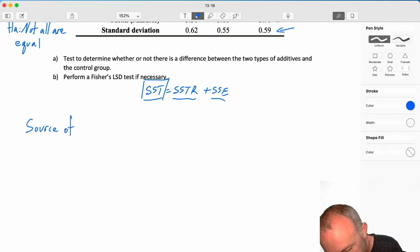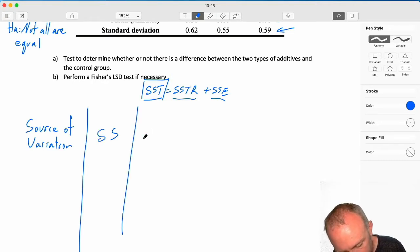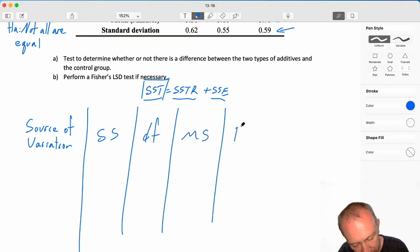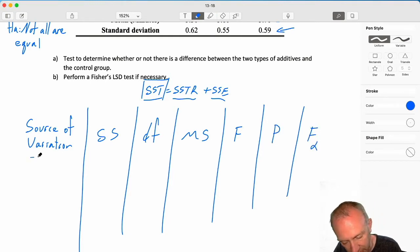In order to do that, we're going to produce this ANOVA table that shows clearly these different sources of variation. So, here we'll have our source of variation. We'll have the two different sums of squares, the degrees of freedom, which, that first column, sums of squares divided by degrees of freedom, gives us our mean square, which then we can find our F, our P, and we'll also have here some critical value.